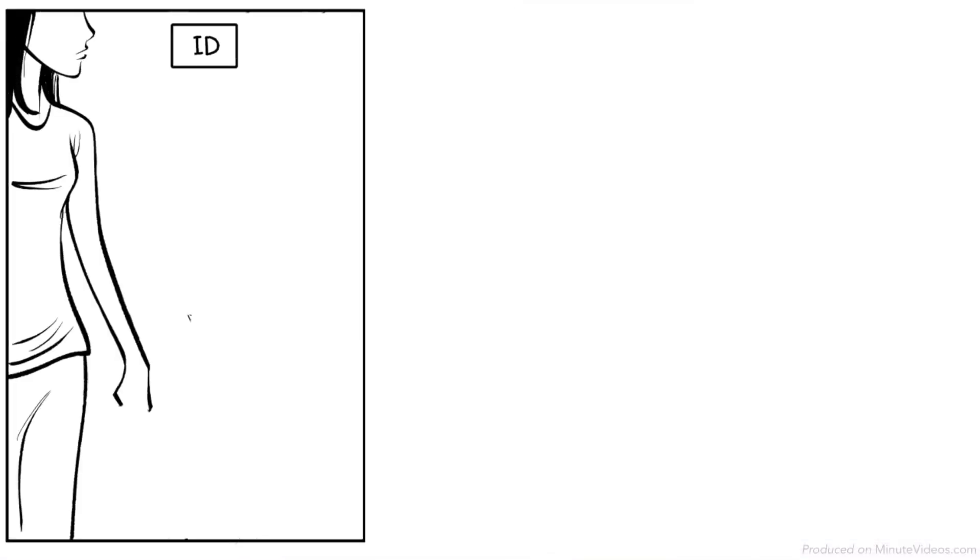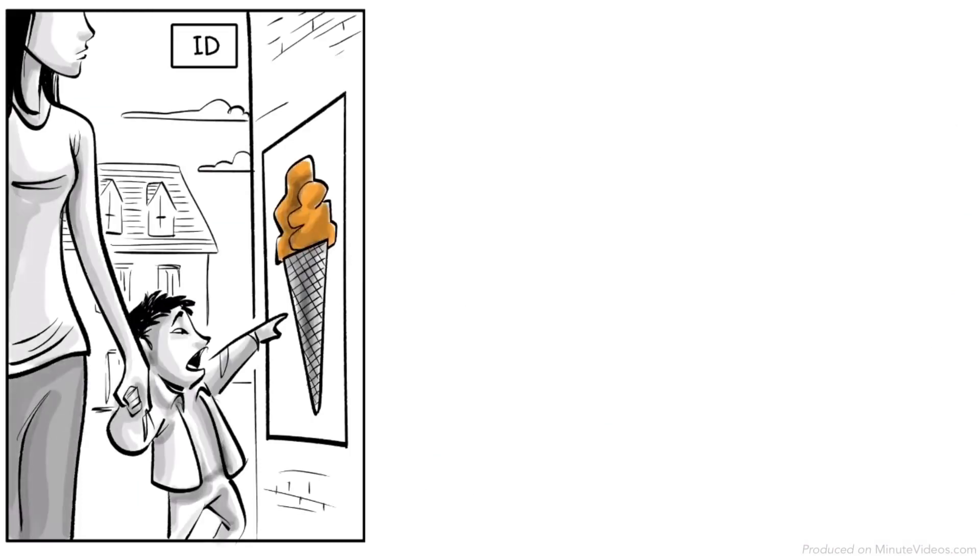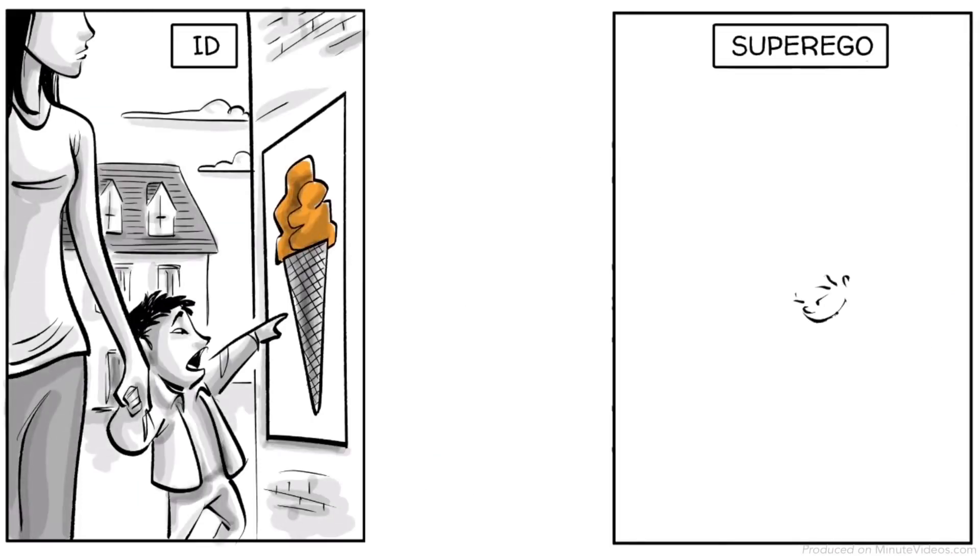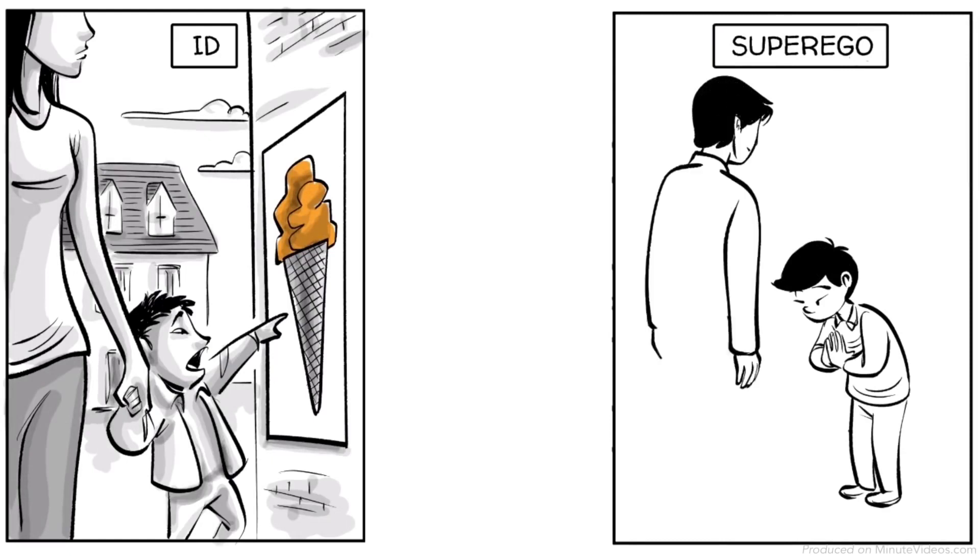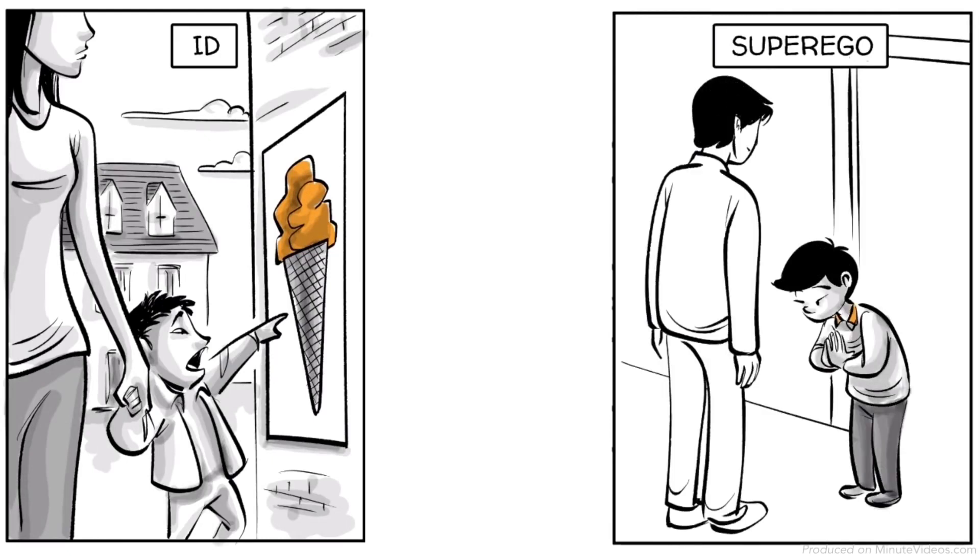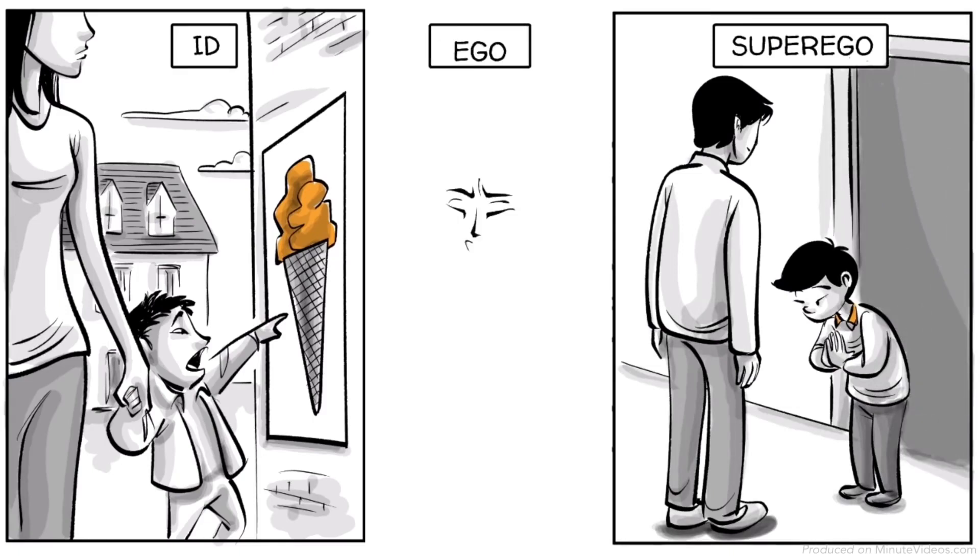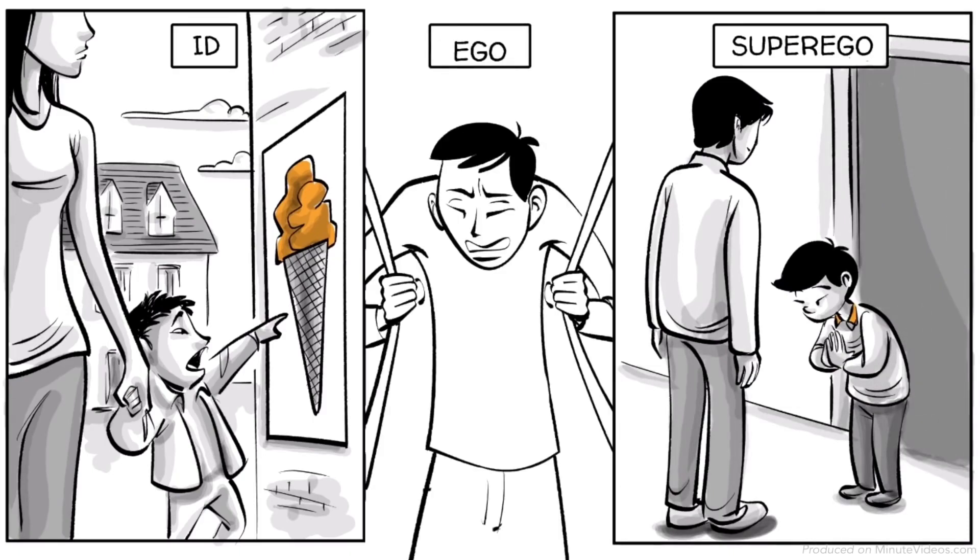Young children are driven by the id and demand immediate satisfaction. At around age seven, we begin to develop a superego and want to become good moral citizens and please others. The ego is formed with adolescence to balance the two forces.